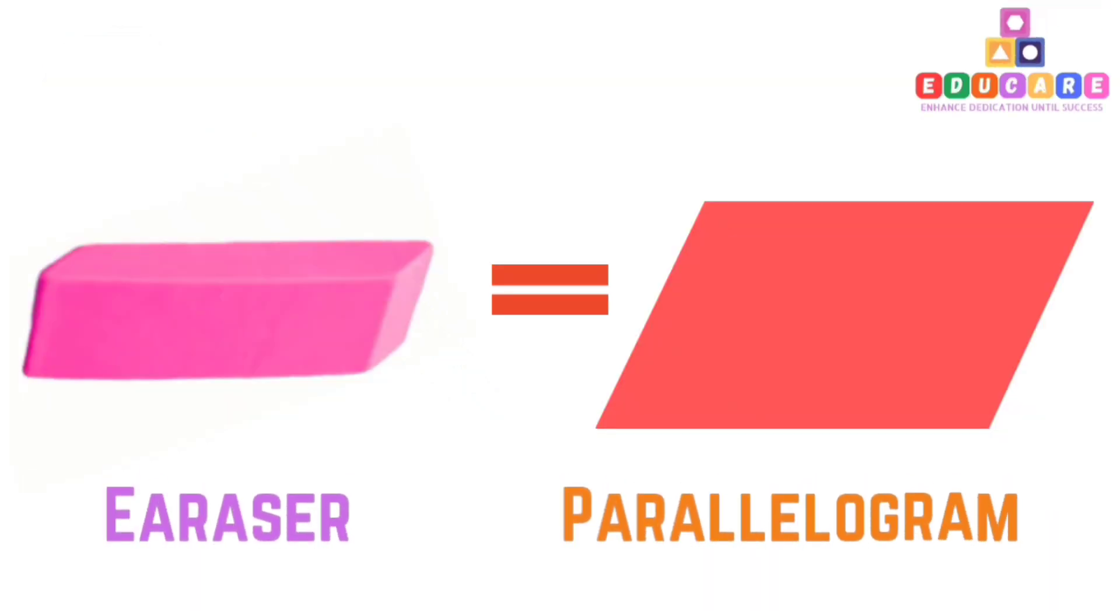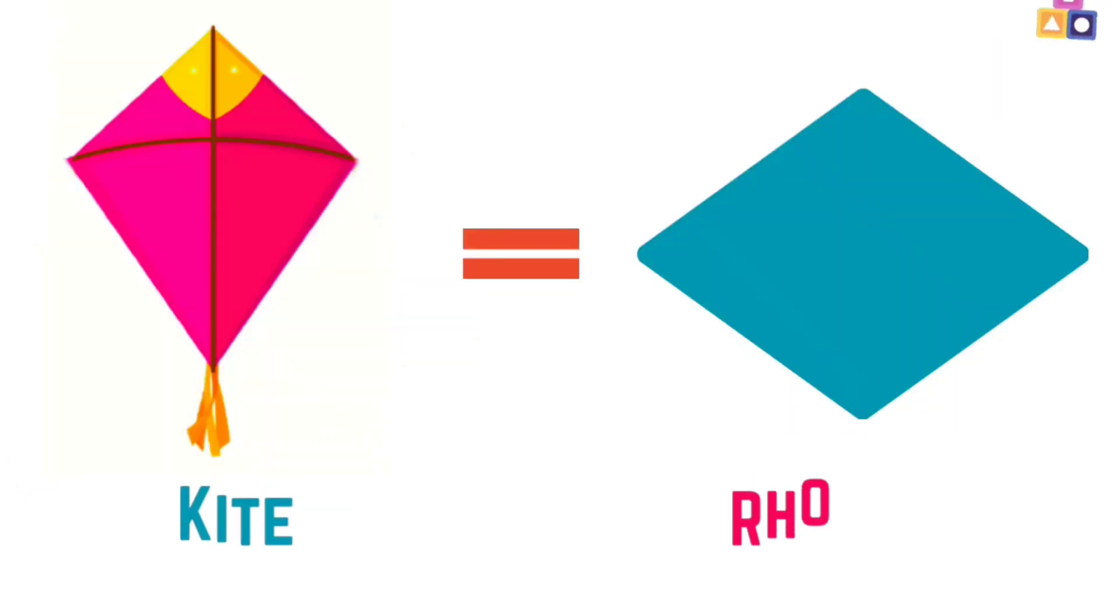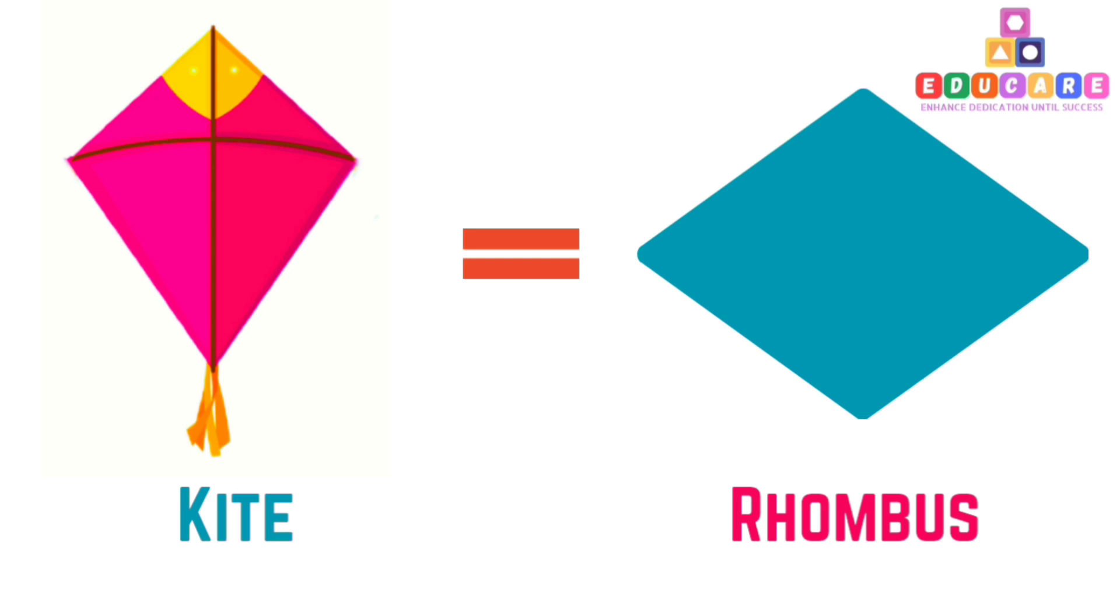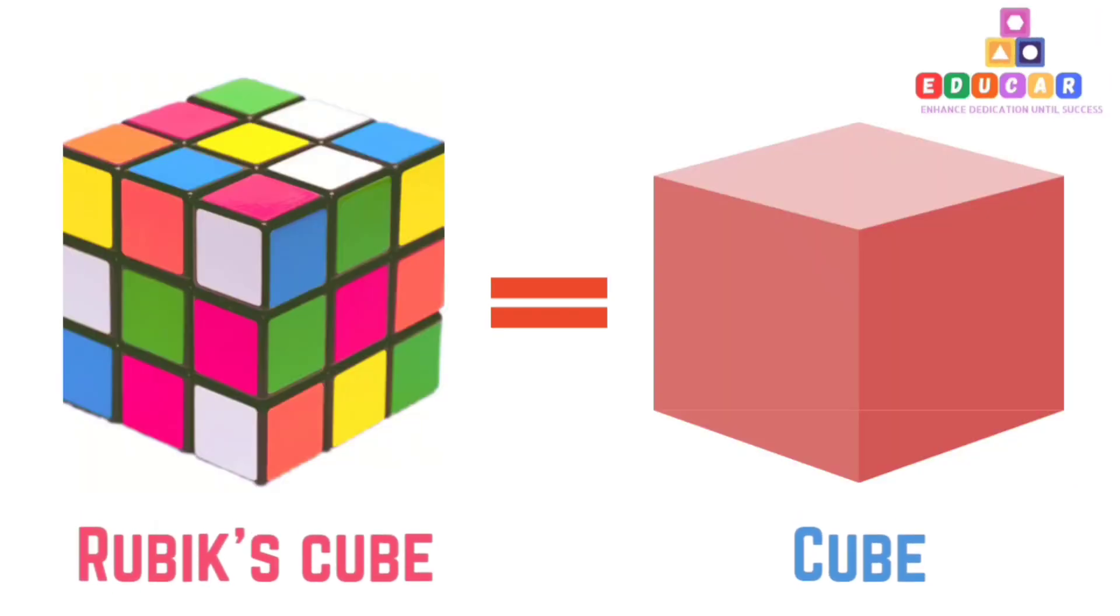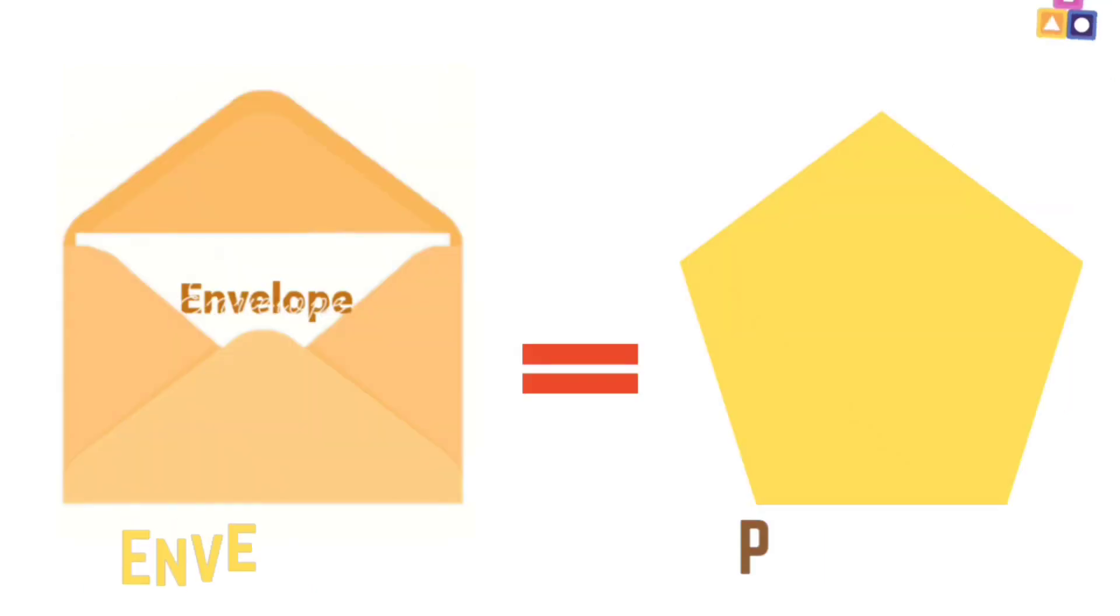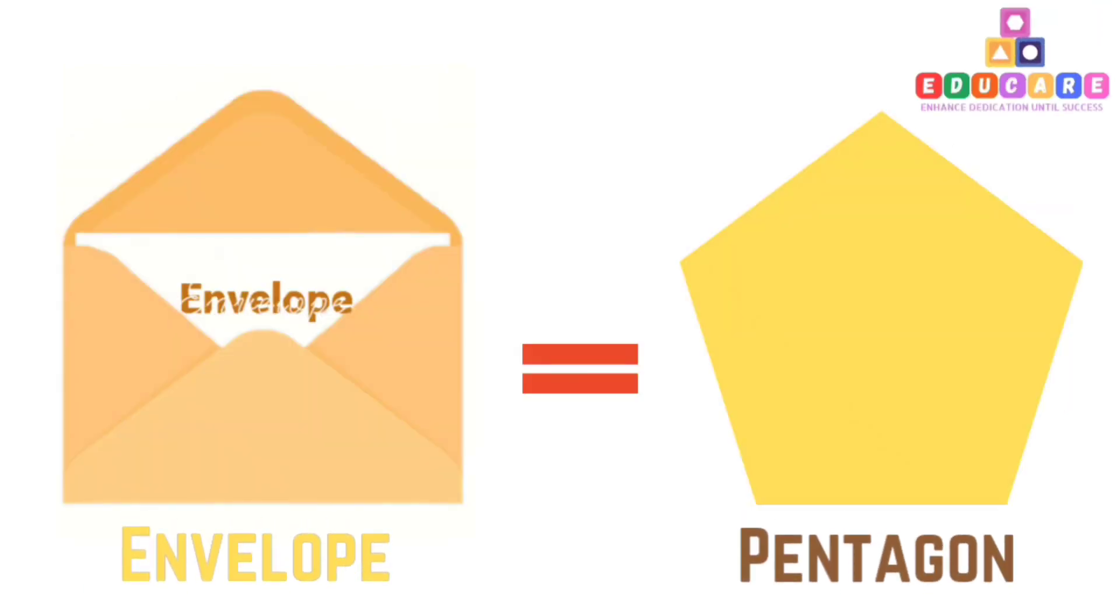Bread slice is example for right triangle. Eraser is example for parallelogram. Kite is example for rhombus. Shoulder bag is example for trapezoid. Rubik's cube is example for cube.